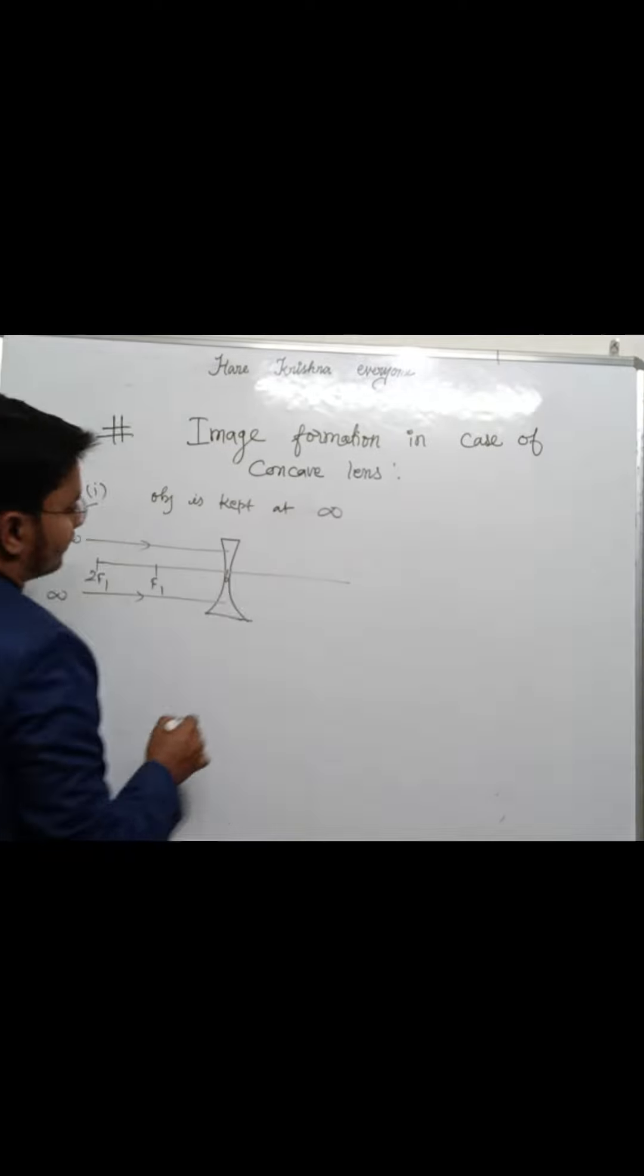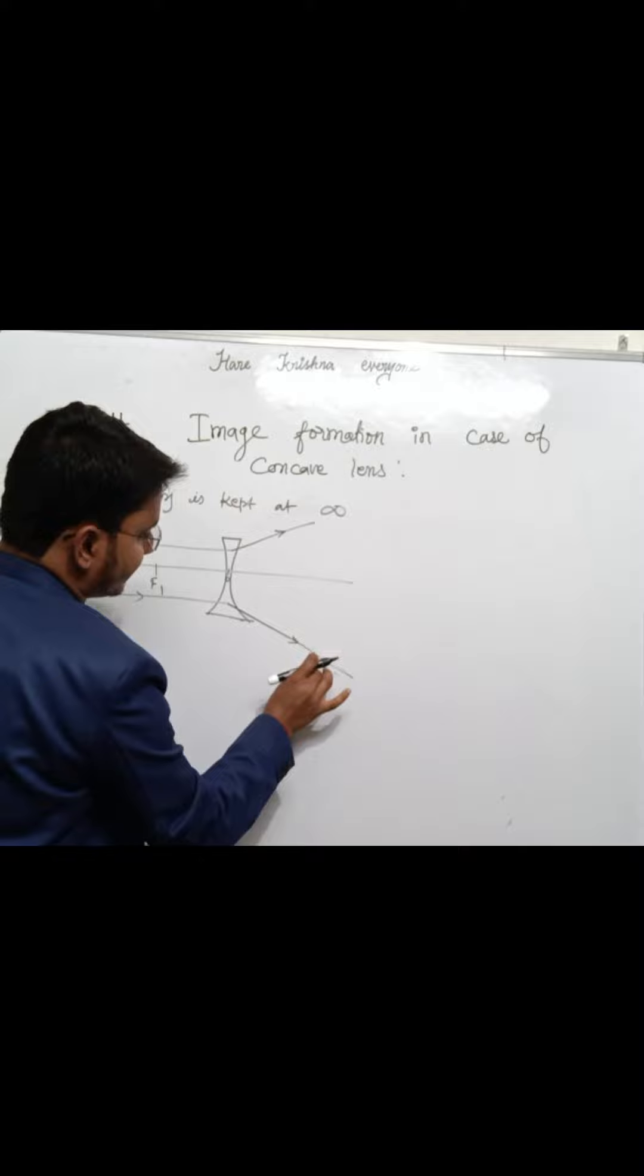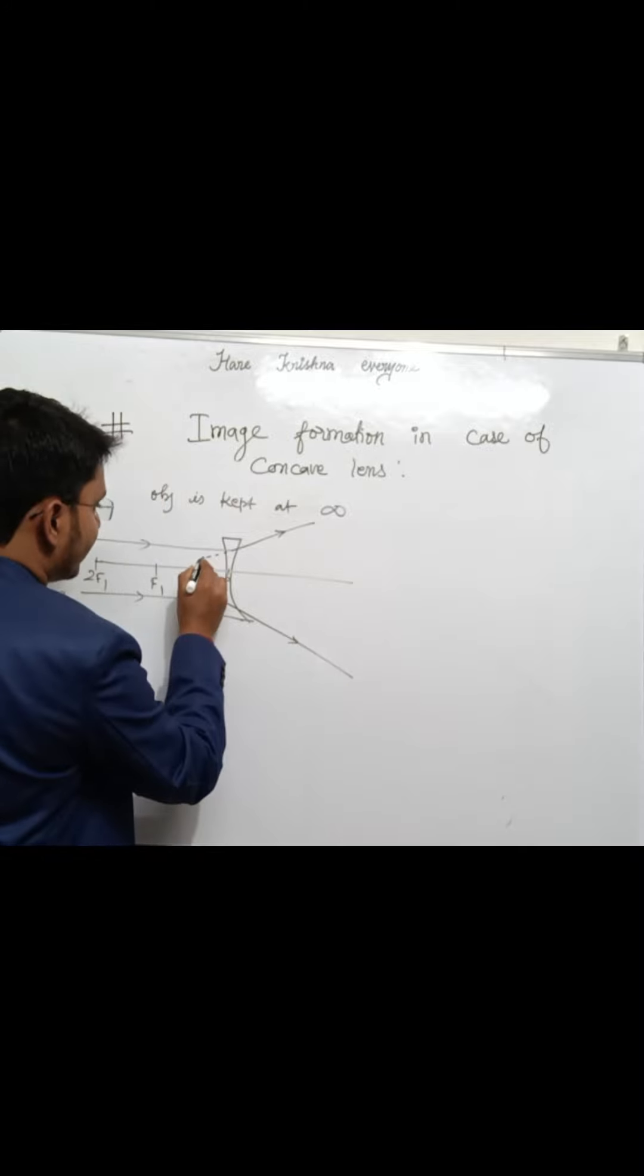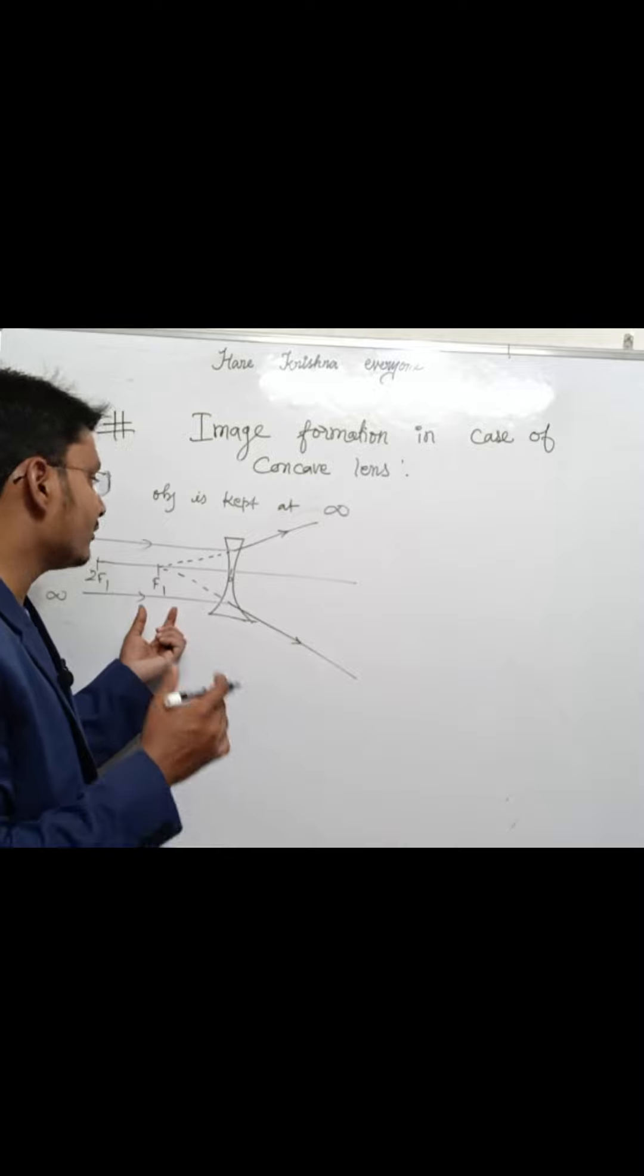Parallel rays pass through the concave lens. After reflection, these two diverging rays are produced in the backward direction and appear to meet at a point. The point at which the reflected rays appear to meet forms the virtual image.